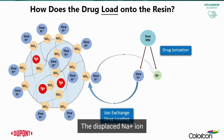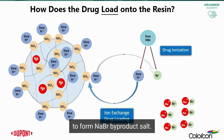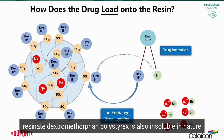The displaced sodium Na+ ion associates with the Br- ion from the drug to form sodium bromide as a byproduct salt. As resins are insoluble in nature, the resulting resinate, dextromethorphan polystyrex, is also insoluble in nature.